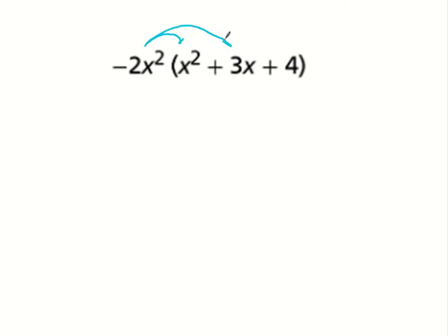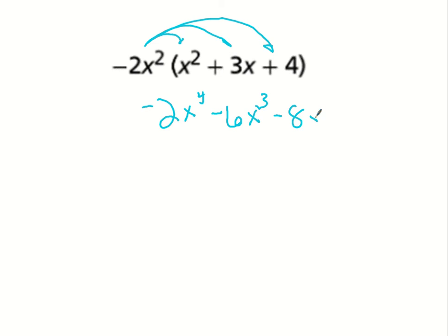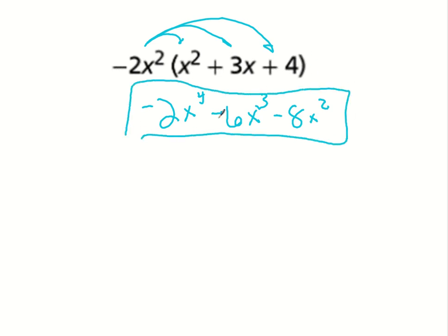So I'm going to distribute. Negative 2 times 1 is negative 2, and x to the fourth because 2 plus 2 is 4. Negative 2 times 3 is negative 6, and this is x to the third because 2 plus 1 is 3. And then this gives me negative 8x squared. The constant — I just tack it on. And I'm done.